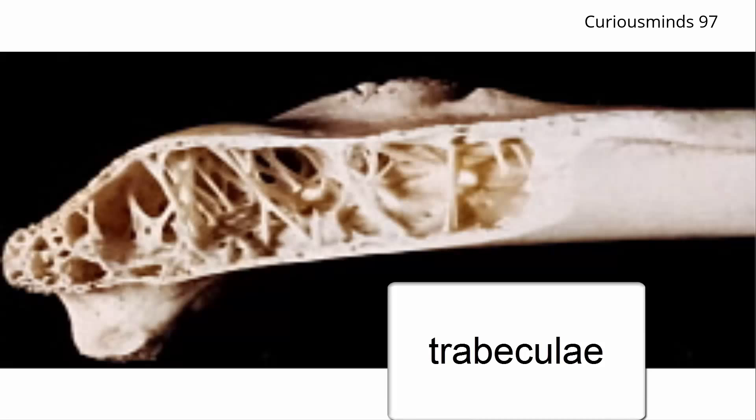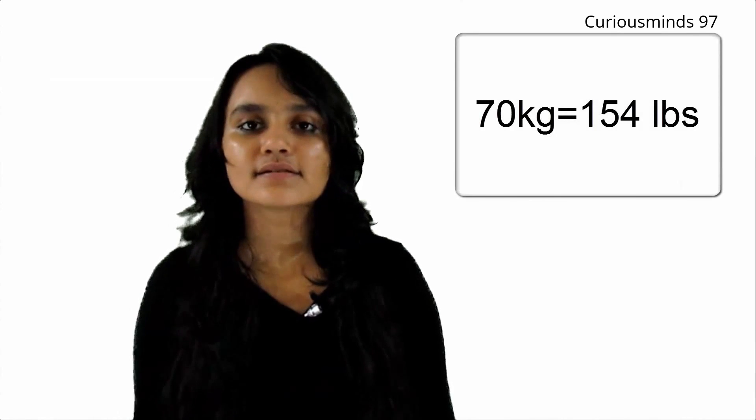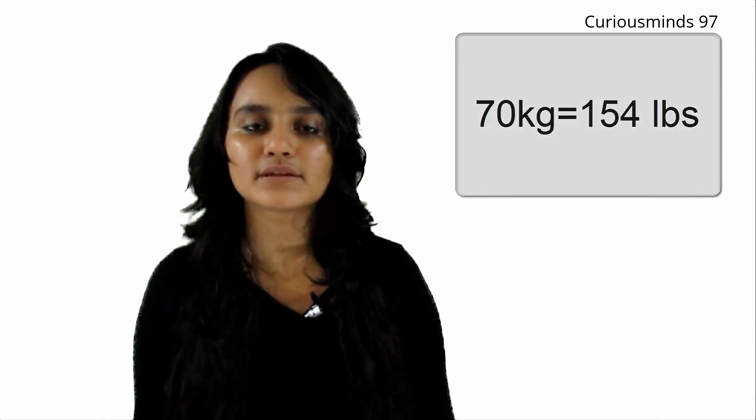This makes the bones of the large flying birds extremely light. For a human weighing 70 kilograms to achieve any type of flight, he or she would require wings with approximately 20 square feet of surface area.